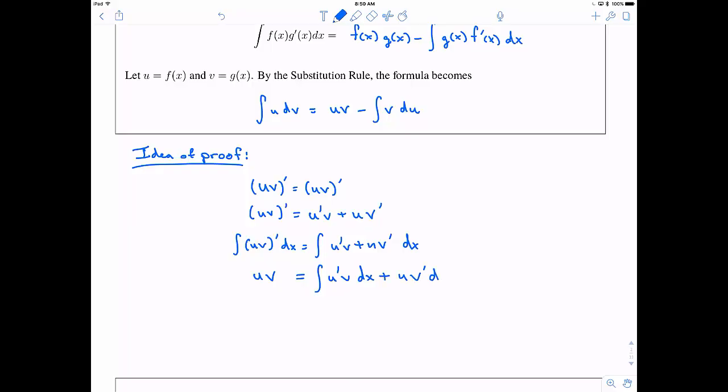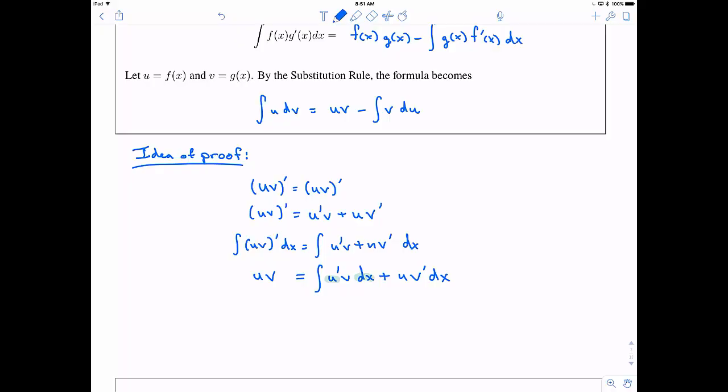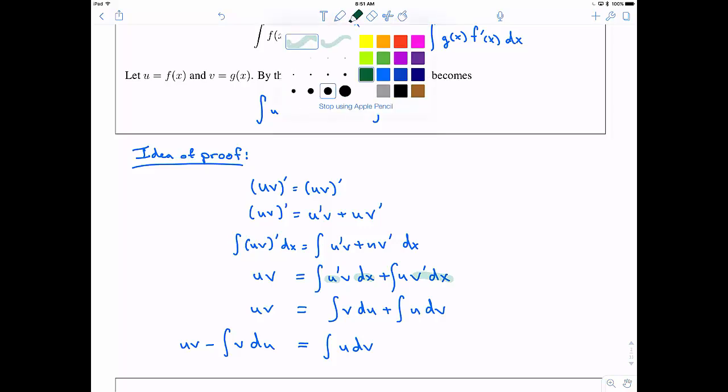The final thing is that I'm going to use my definition of differentials. So, instead of writing u prime dx and v prime dx, I'm going to write this as du. So, v prime dx is dv. Writing like this, I have the integral of v du plus the integral of u dv is equal to uv. So, now, if I just subtract my integral of v du from both sides, well, then I get the formula up above.